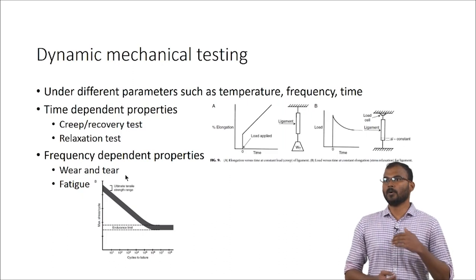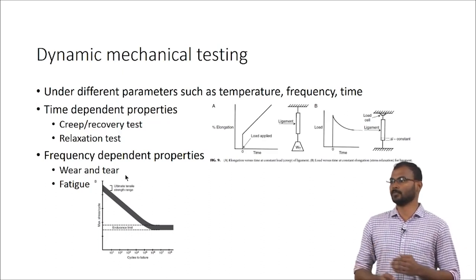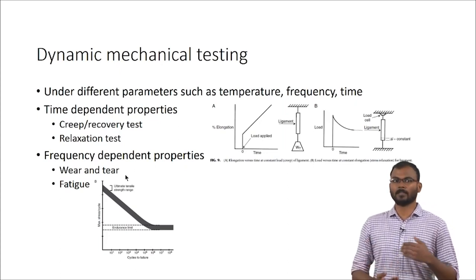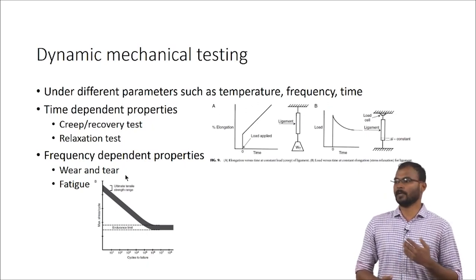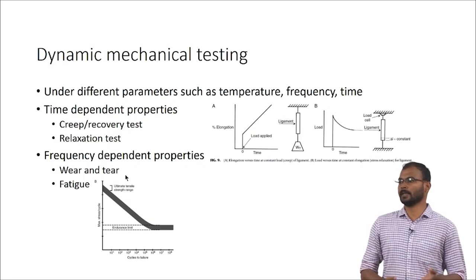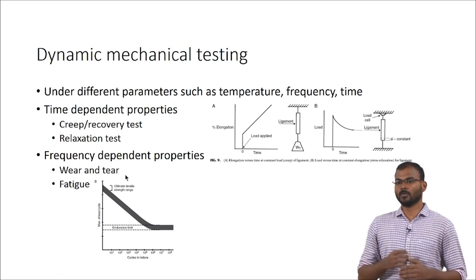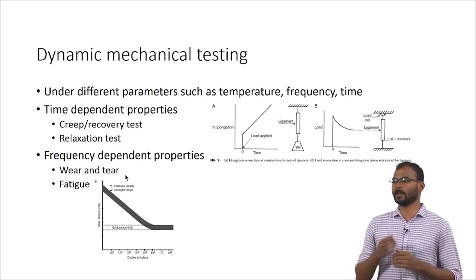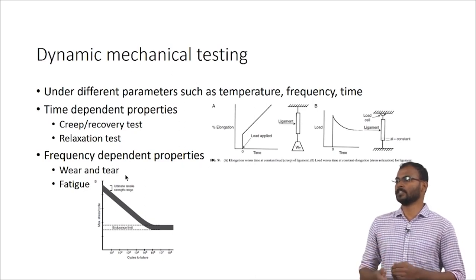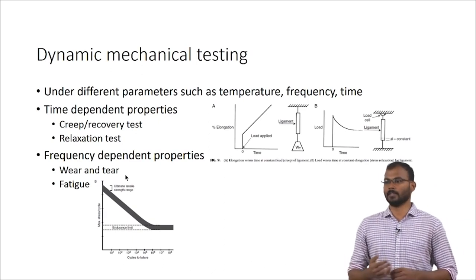Frequency is how many times a material is being used for that specific application. Consider a hip prosthesis — how much distance you walk affects the frequency. Consider heart valves: they have to beat around 72 times per minute. Over a day, a year, and a prolonged period, the valve has to open and close an enormous number of times. Over those periods, the material is in contact with nearby surfaces, causing corrosion, surface etching, and erosion that reduce the efficiency of the material. Those factors have to be tested before clinical use.